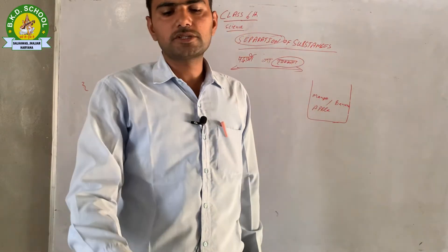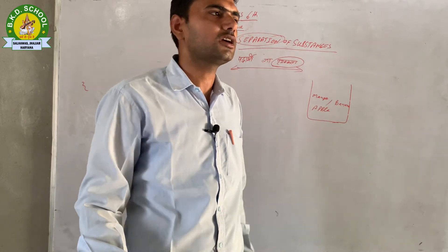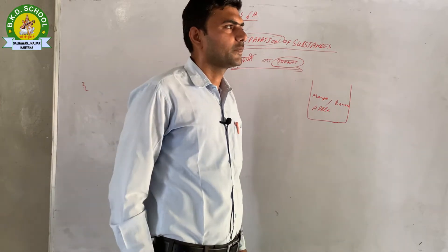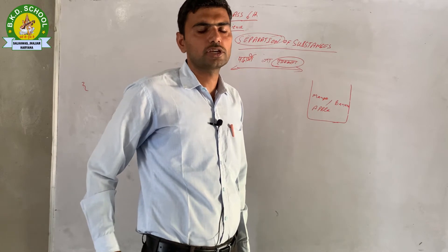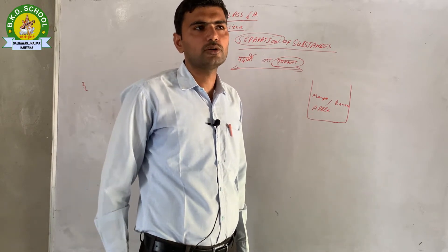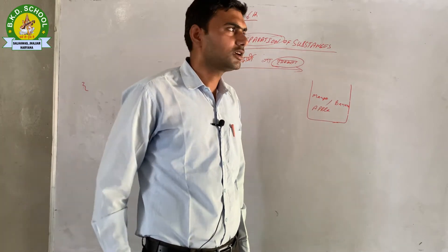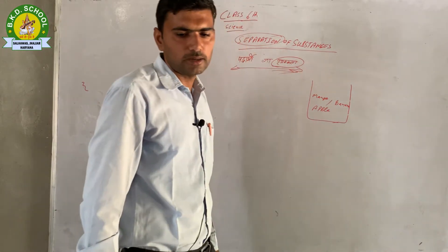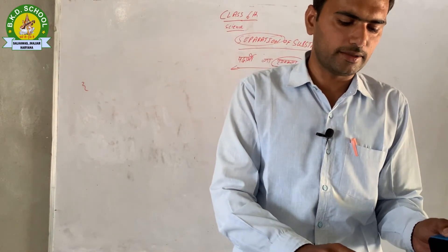किसी मिश्रण में से जो हानिकारक या अनुपयोगी पदार्थ होते हैं उनको अलग करते हैं, या अपनी सुविधा के लिए अलग करते हैं। जो हानिकारक पदार्थ हैं उनको भी अलग करना — यही पृथक्करण कहलाता है। पृथक्करण के जो तरीके होते हैं वे सब अलग-अलग हैं।